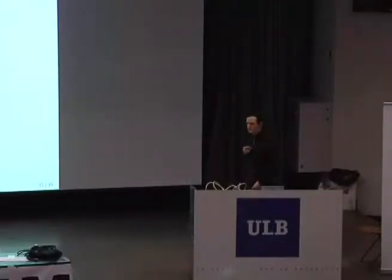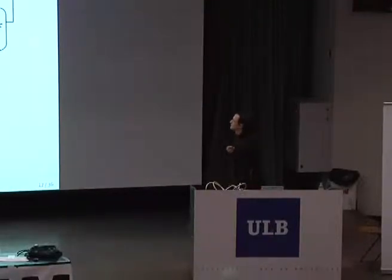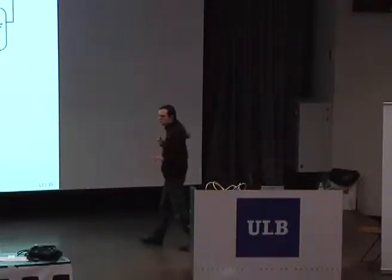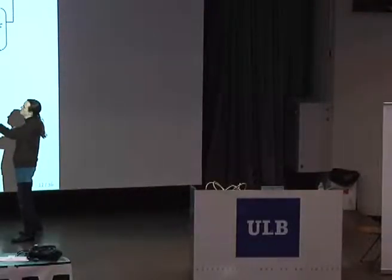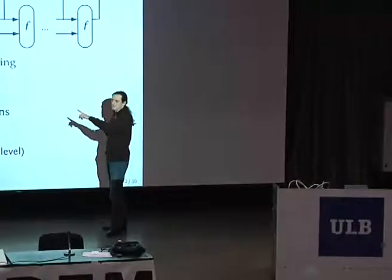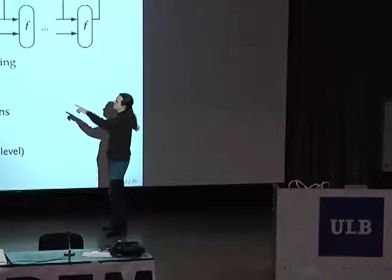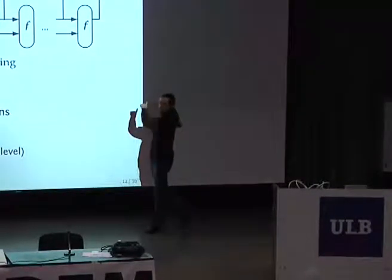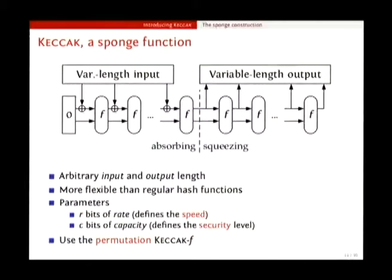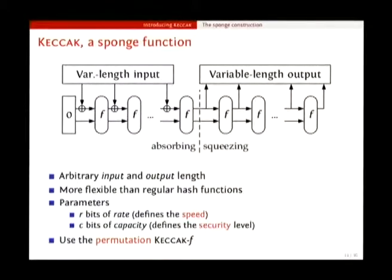So what is it really, then, this Keccak thing? Keccak is actually more than just a hash function. It's what we call a sponge function. The main difference is that you can take any message of any length and produce another message of any length. Mainly, the main thing is that it's much more flexible than hash functions. And you have two parameters.